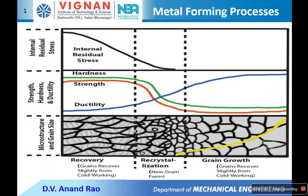If you increase the temperature of the cold worked component, initially residual stresses will reduce. As seen in the graph, residual stresses decrease in the recovery zone. The cold worked material grains have higher residual stresses due to dislocation density, but after heating and increasing temperature, these residual stresses decrease.